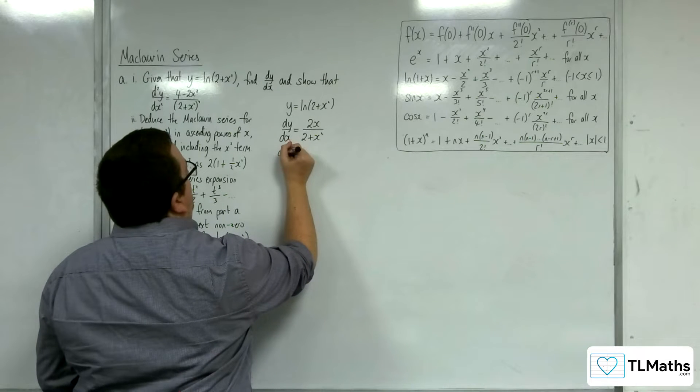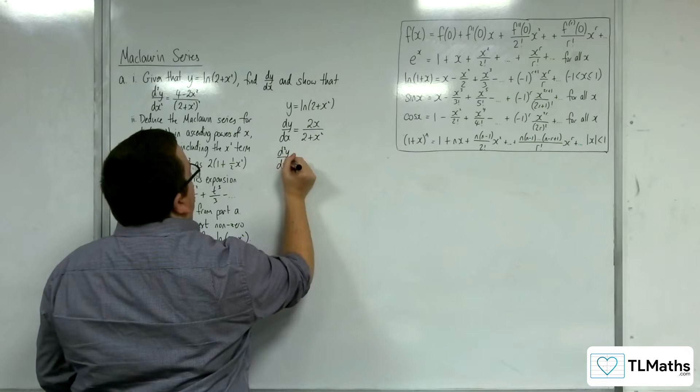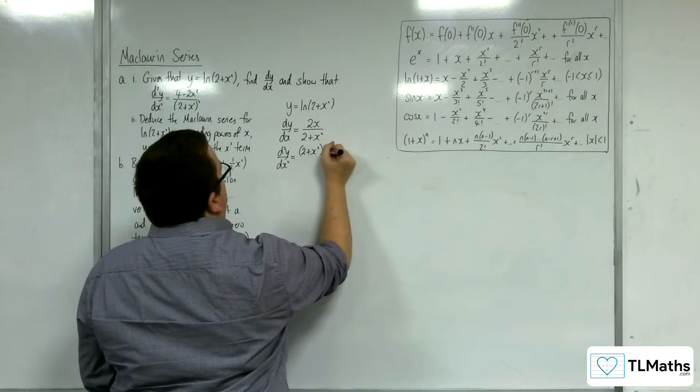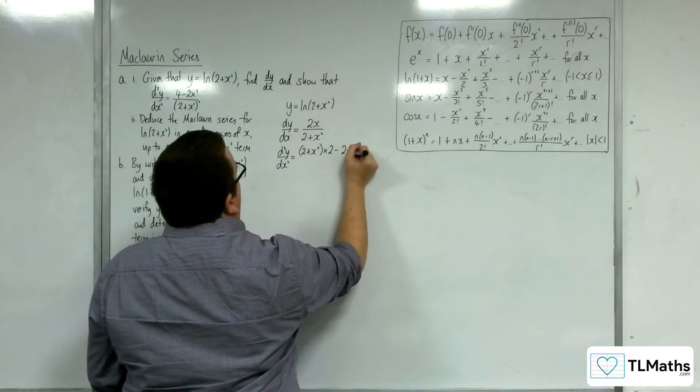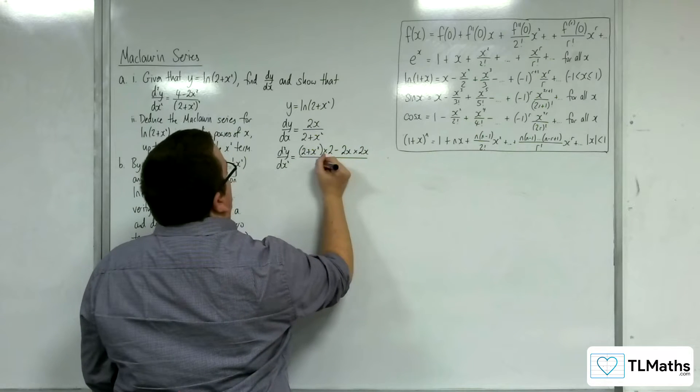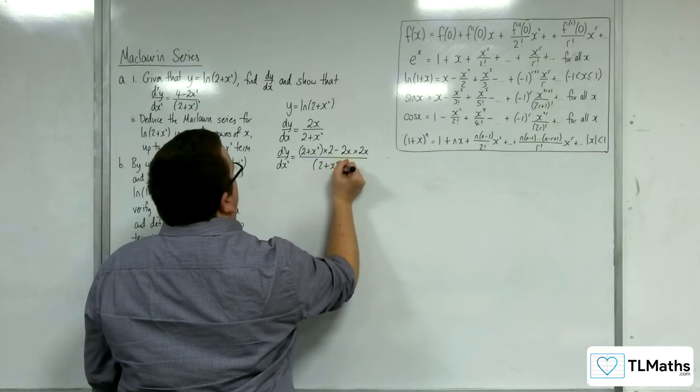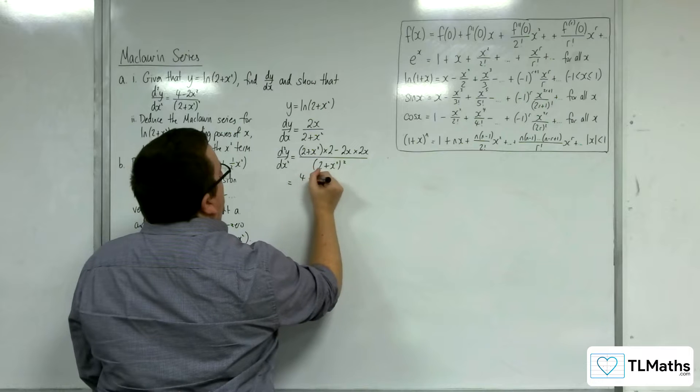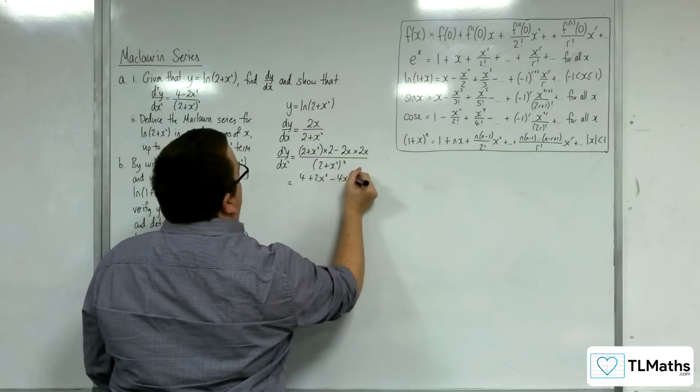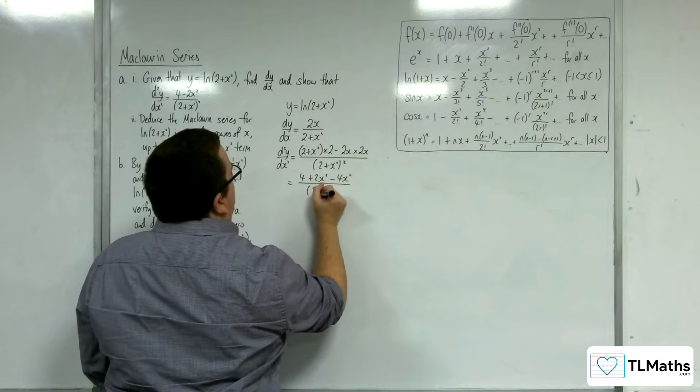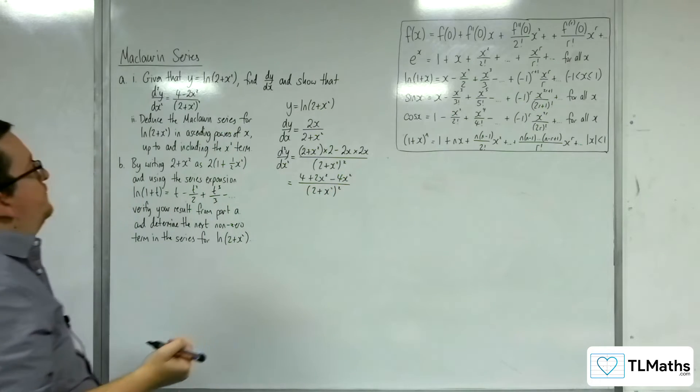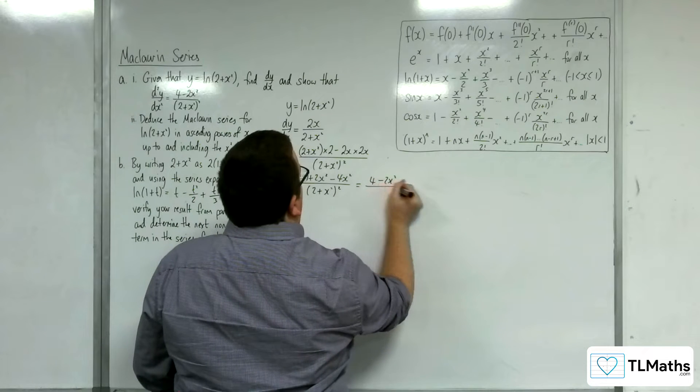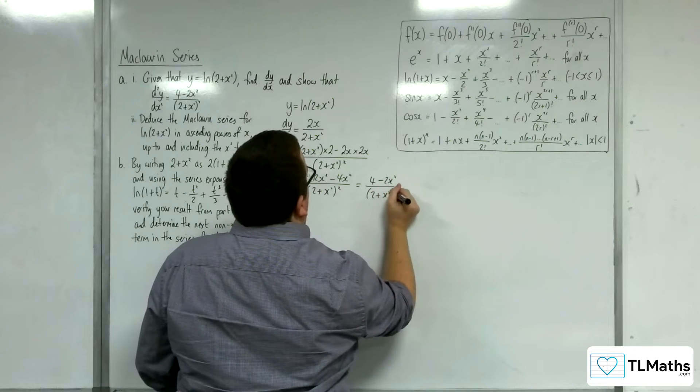Now in order to differentiate that, we would use the quotient rule. So we have the bottom, 2 plus x squared times the derivative of the top, take away the top times the derivative of the bottom, all over the bottom squared. So expanding the numerator, we've got 4 plus 2x squared, take away 4x squared, all over 2 plus x squared squared.